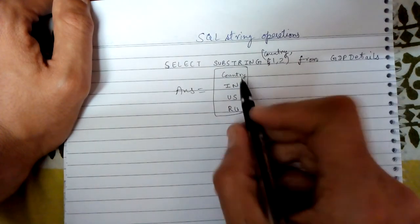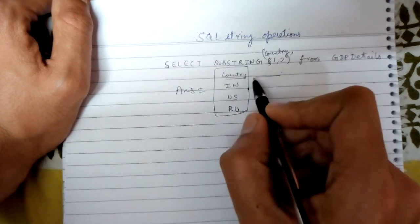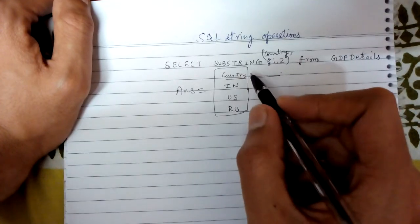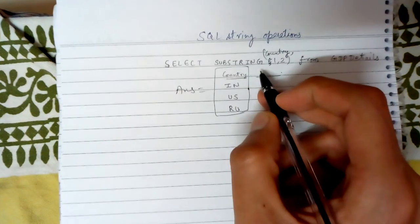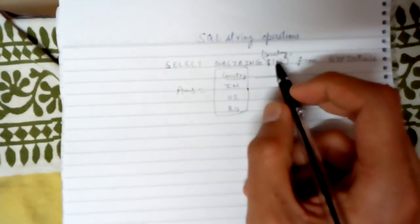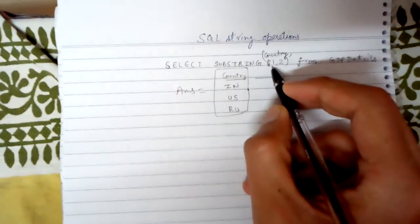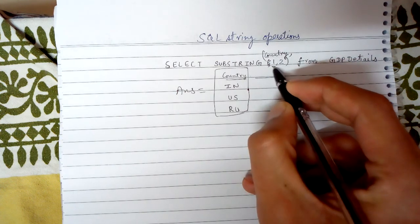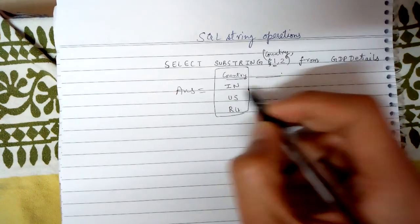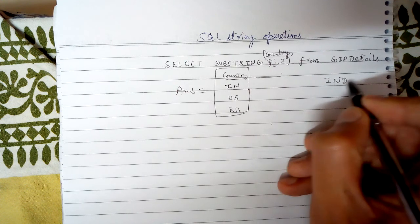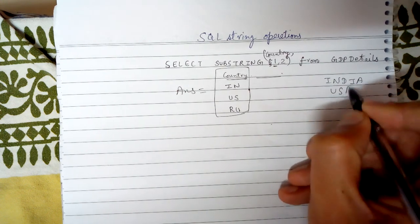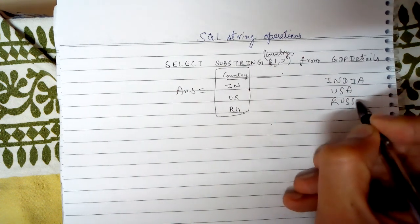details of various countries, so country and GDP details. In this I am choosing the substring of country attribute starting from the first letter. Let's say there are India, USA, Russia, something like this. So I will